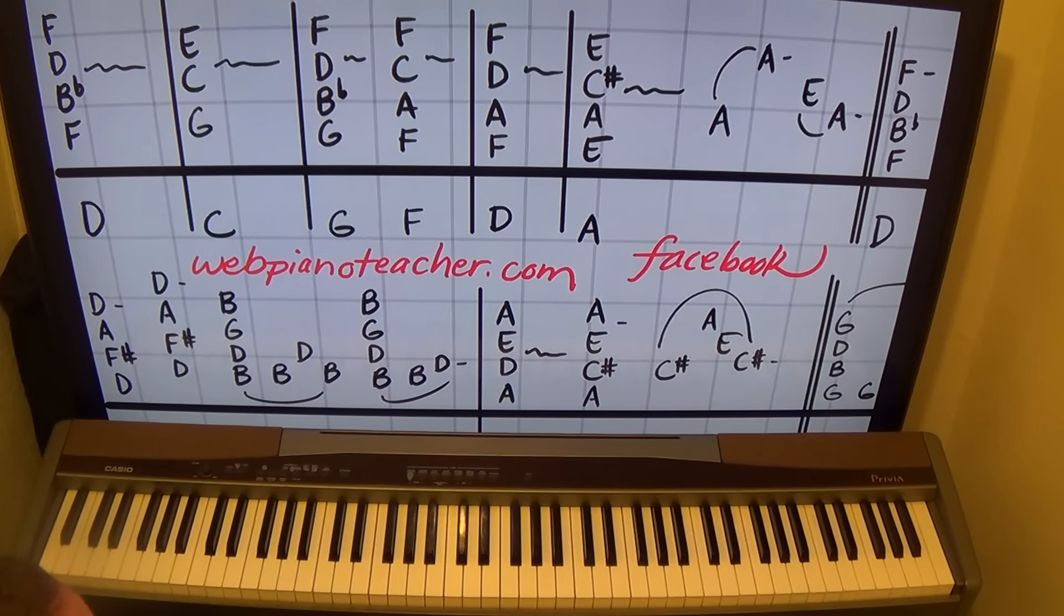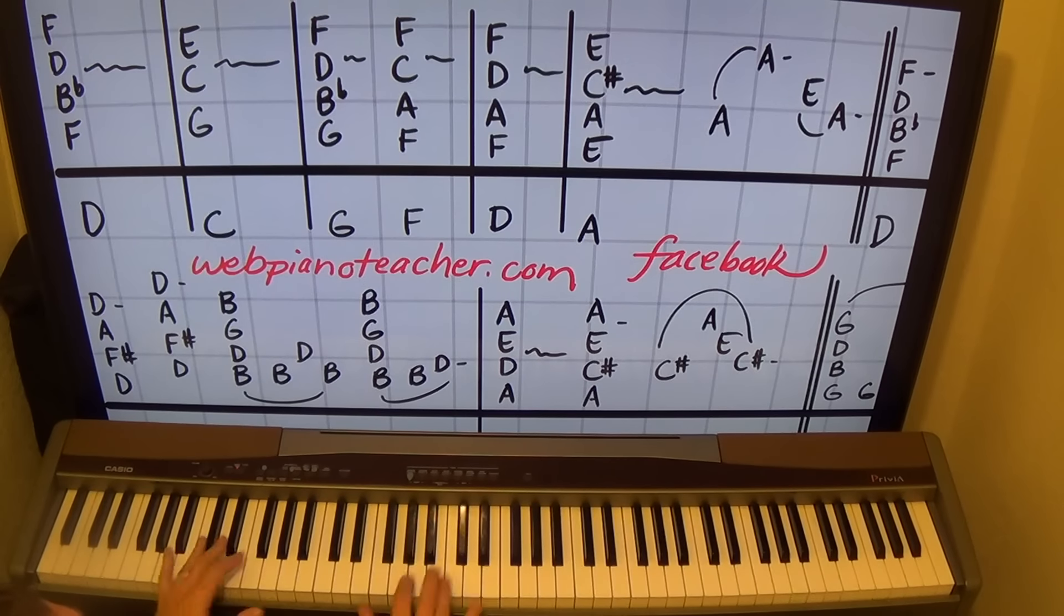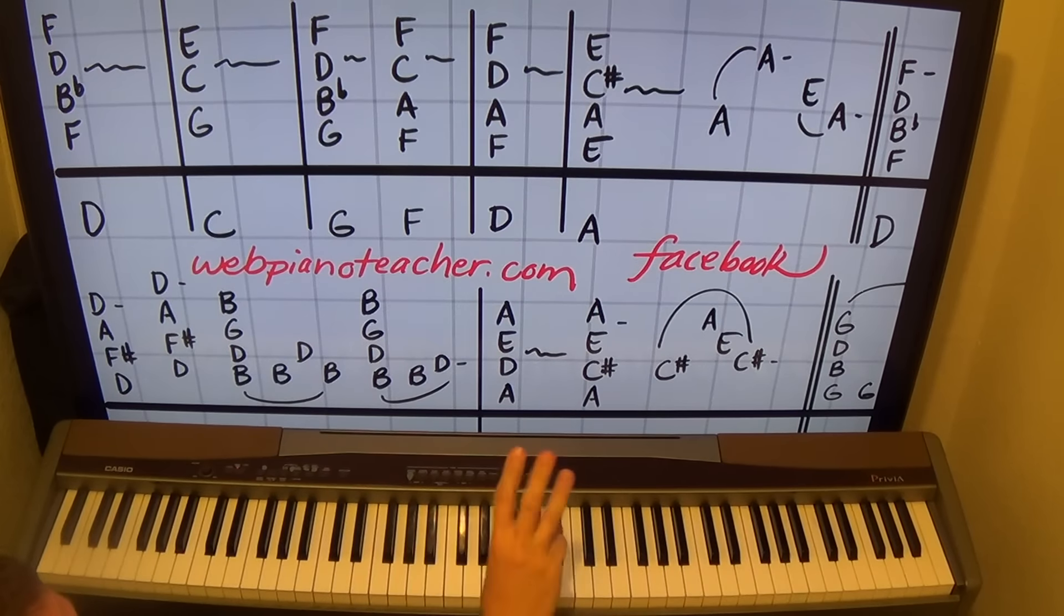Now this measure is only going to get two counts, and that'll happen sometimes. People will write a song and it's in 4/4, four counts per measure, they'll just have one measure that has two counts in it—that's a normal thing, and that's what happens here. F, A, D, F, left hand on the D octave, just two counts: one, two, one. Then we go to an A chord, left hand on A octave, right hand on E, A, C#, E. I'll use one, two, four, five. Give me three counts on that first: one, two, three.